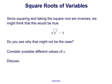Since squaring and taking the square root are inverses, we might think that this would be true: that the square root of x squared is equal to x. But do you see why that might not be the case? Consider possible different values of x and discuss it with a partner. Think about what if x is a positive number, what if x is 0, or what if x is a negative number. Input those values and see if it's true, or maybe if something a little fishy is going on.